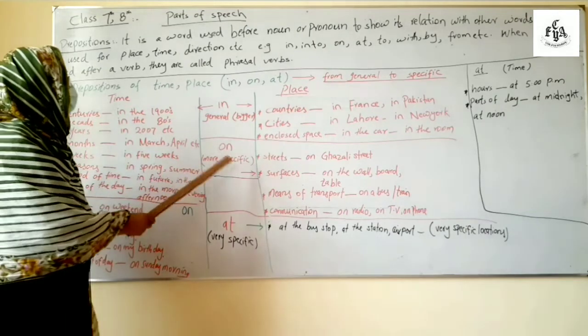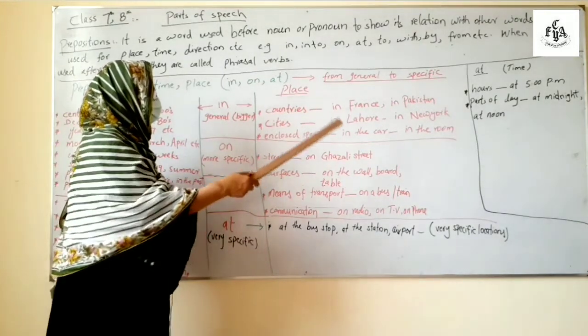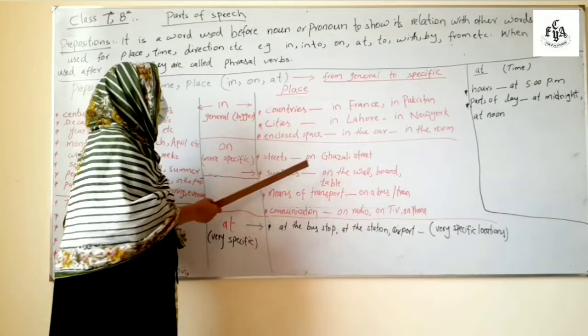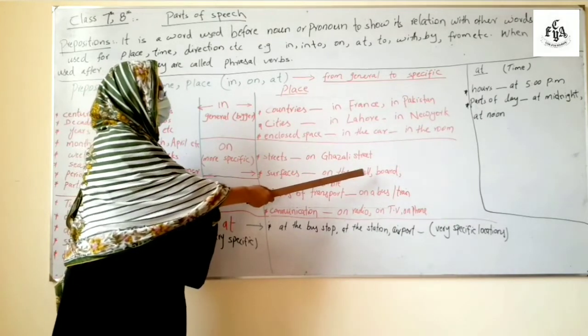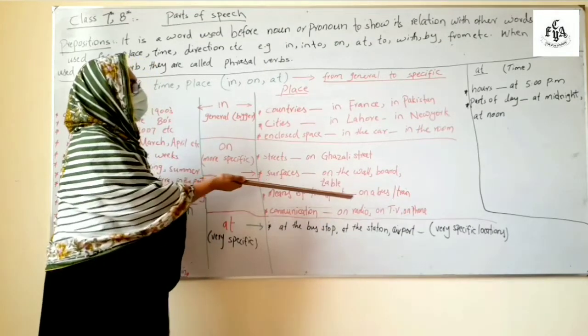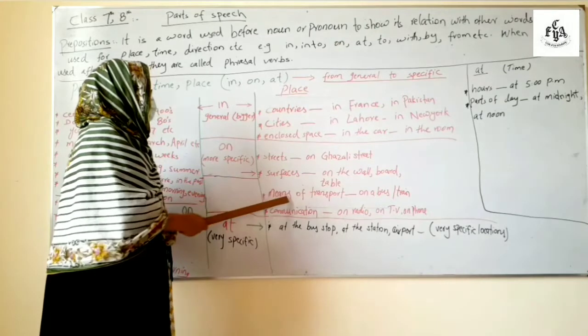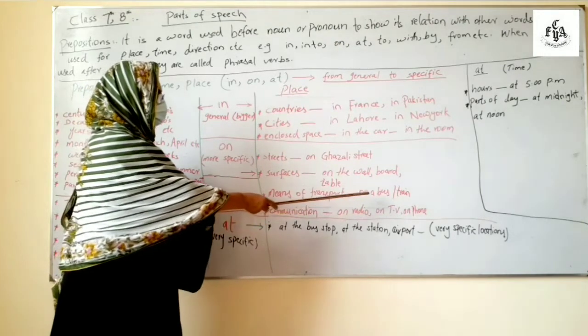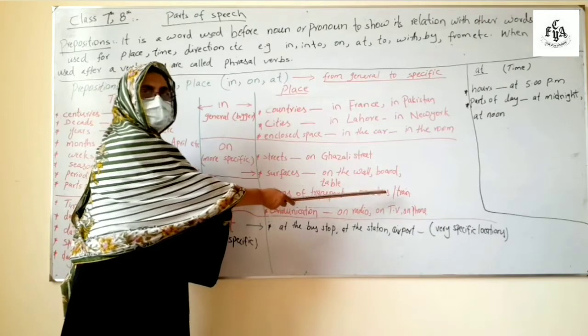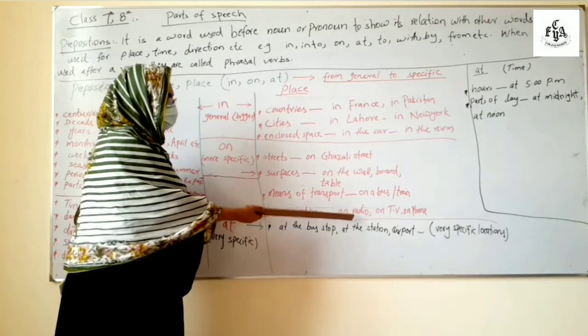Now on for places before the name of streets, like for example on Ghazali street, she lives on Ghazali street. Surfaces, on the wall, surface like on the board, on the table, on the wall. Means of transport and communication, for example on a bus, on a train, then communication like on radio, on TV, on phone.